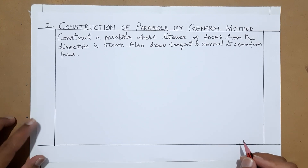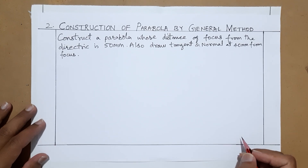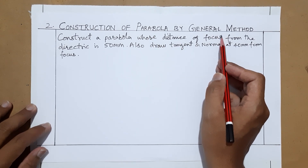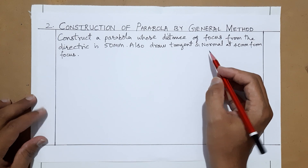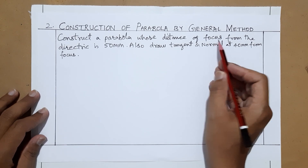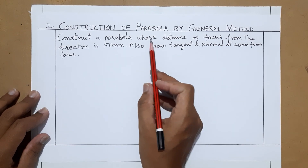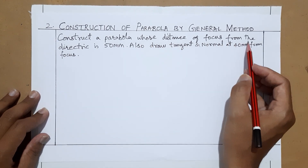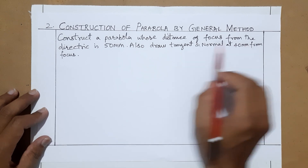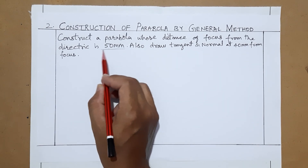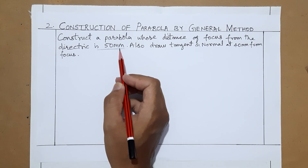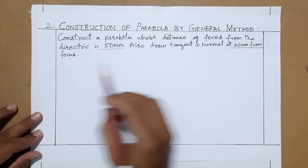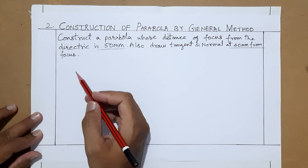Hello, welcome back to my Rafeeq Engineering Drawing channel. In this video we will see how to draw a parabola by general method. Previously we discussed how to draw an ellipse by general method. The question is: construct a parabola whose distance of focus from the directrix is 50 mm. Also draw tangent and normal at 40 mm from the focus.